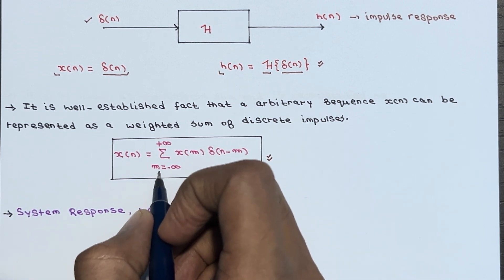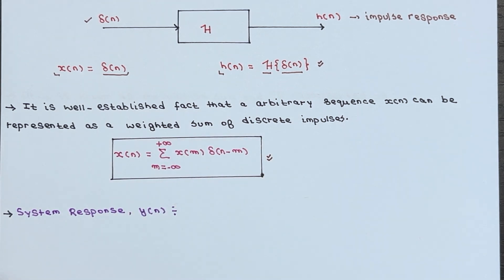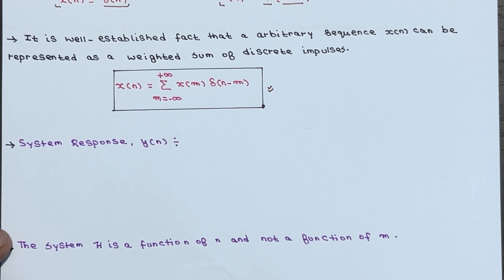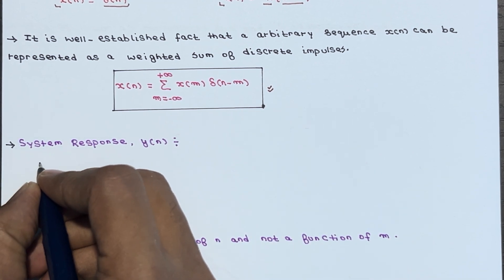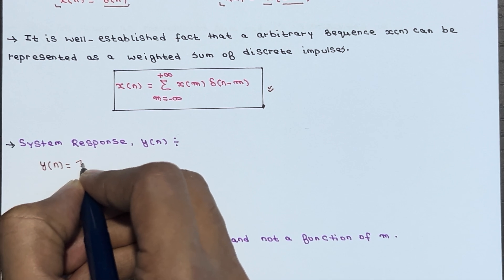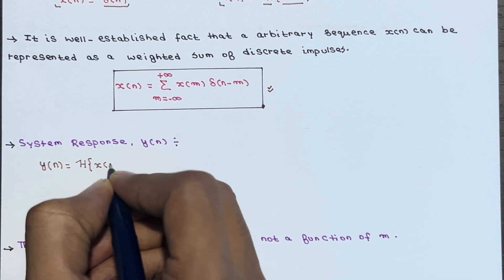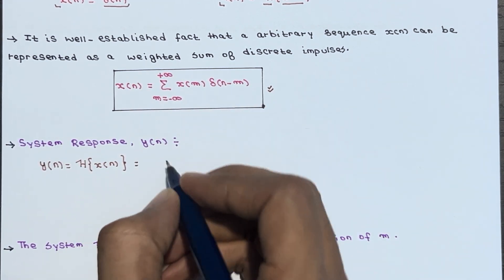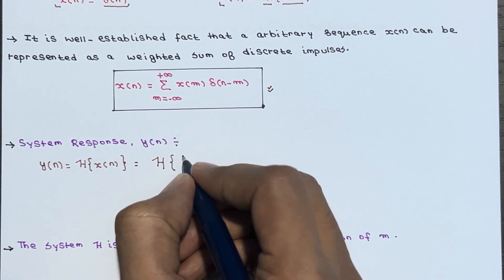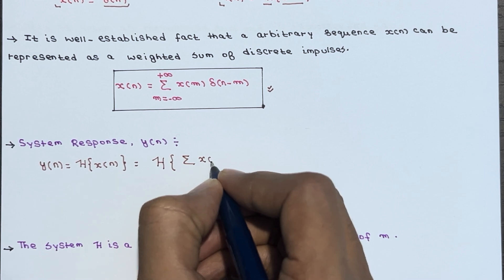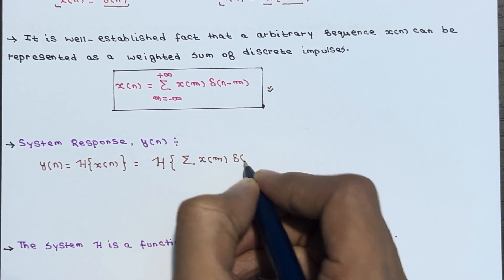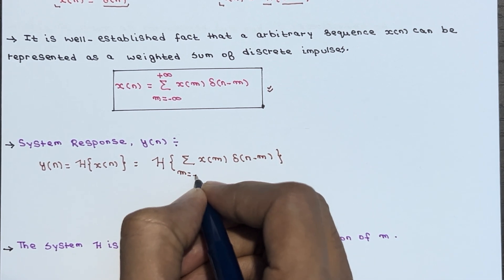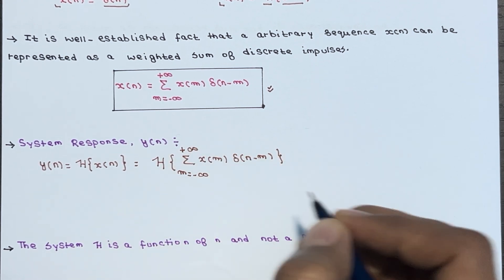When we talk about the system response y(n), it is the transform of X(n). Since X(n) equals that summation formula, y(n) becomes the transform of the summation of X(m)·δ(n−m), where m ranges from −∞ to +∞.